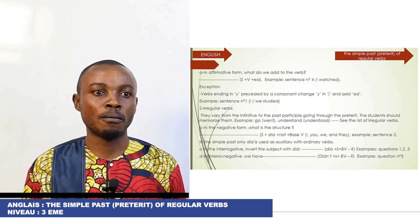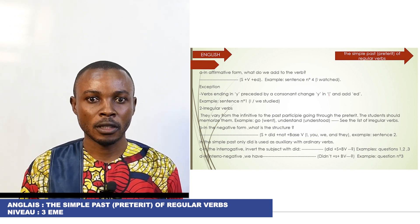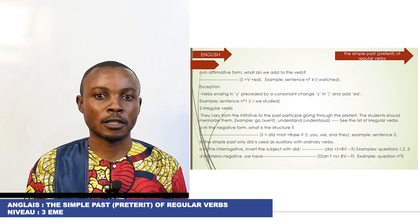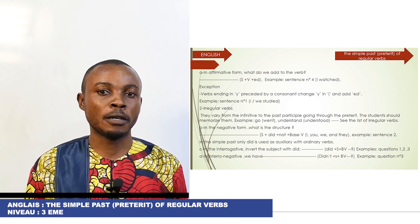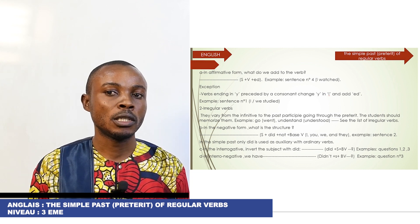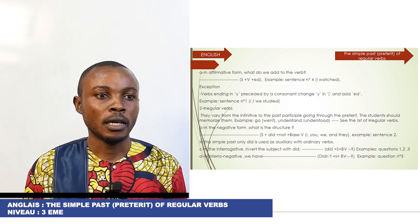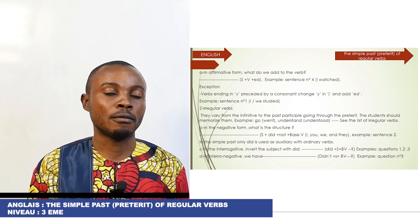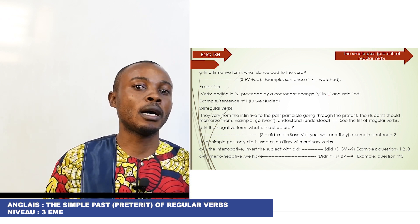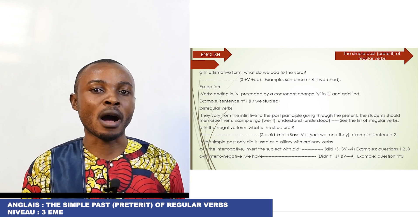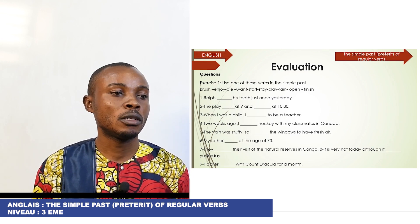In the interrogative form, invert the subject with did. You can find: did plus subject plus base of verb plus question mark. Example, question 1 and 3. In inter-negative form, the structure is: did not plus subject plus base of verb plus question mark. Example, question number 3.